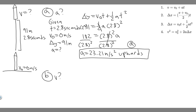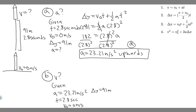For Part B, we want to solve for speed at this time. We'll use kinematics again, but we can use our acceleration now. So: a = 23.21 m/s², t = 2.8 seconds, v₀ = 0 m/s, and Δy = 91 meters. Notice we have 4 out of 5 variables, so we just have to pick an equation that has v. The easiest one is the first one: v = v₀ + at.